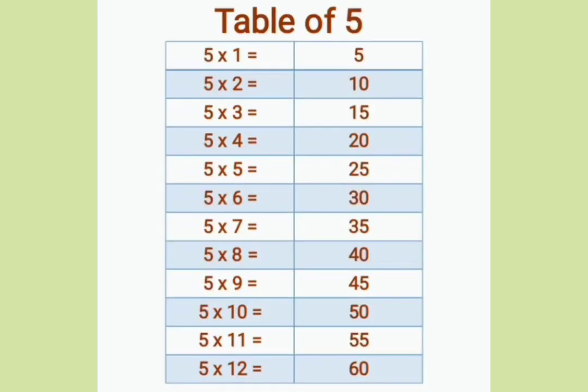Five ones are five, five twos are ten, five threes are fifteen, five fours are twenty, five fives are twenty-five, five sixes are thirty, five sevens are thirty-five, five eights are forty, five nines are forty-five, five tens are fifty, five elevens are fifty-five, five twelves are sixty.